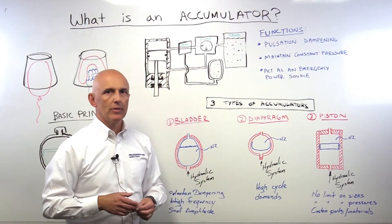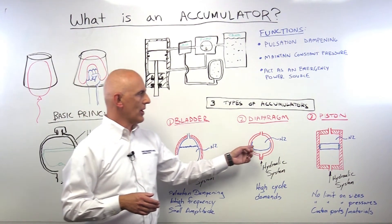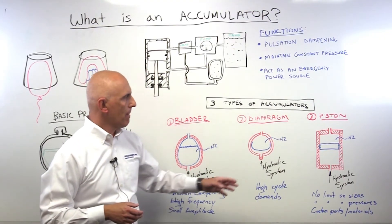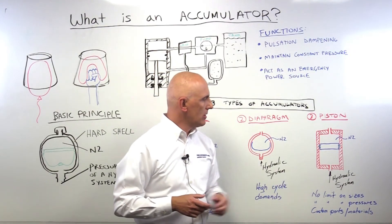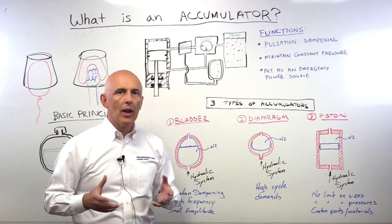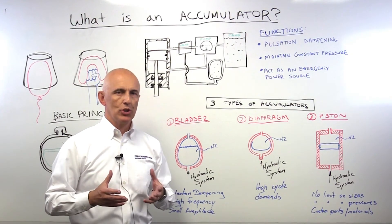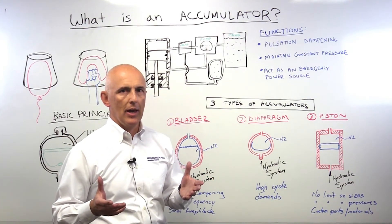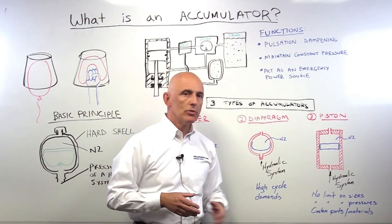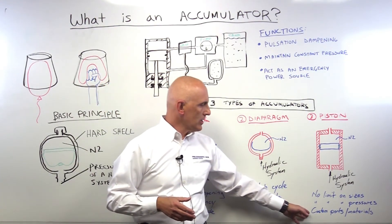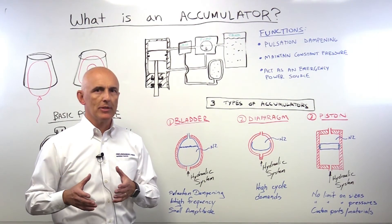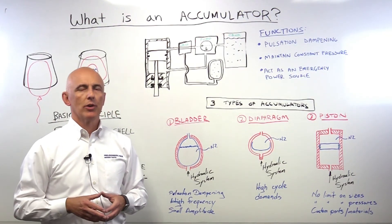Then we go to the piston type accumulator. Instead of a bladder or a diaphragm, we use an aluminum piston to make the barrier with the nitrogen. You keep the nitrogen pre-charge and the system is connected to your hydraulic system. Really, you don't have limits with this type of accumulator. Since it's a machined accumulator, you can make it in any size — from a quarter gallon up to 300 gallons, and up to 40,000 psi. Custom ports, custom design, and materials. The piston accumulator is really for specialized applications where you need custom designed accumulators. Thank you.